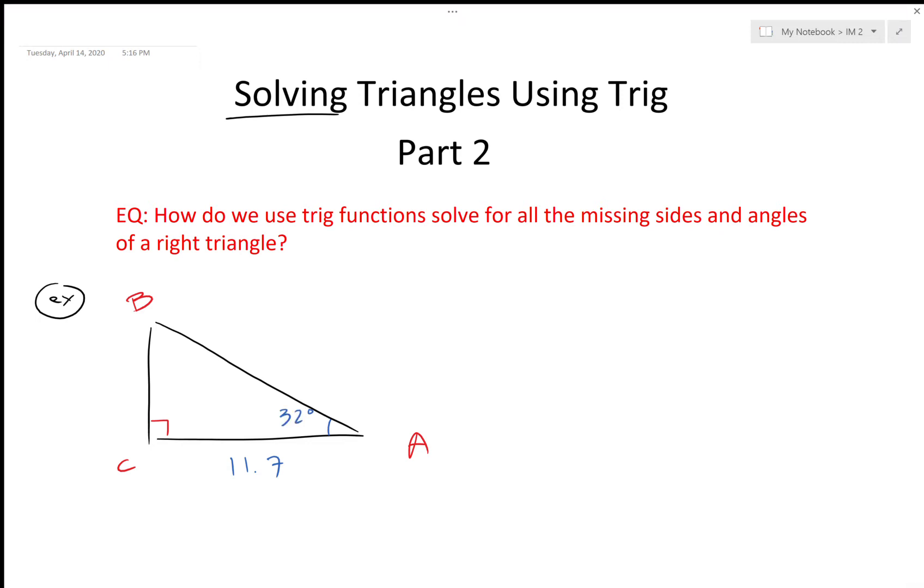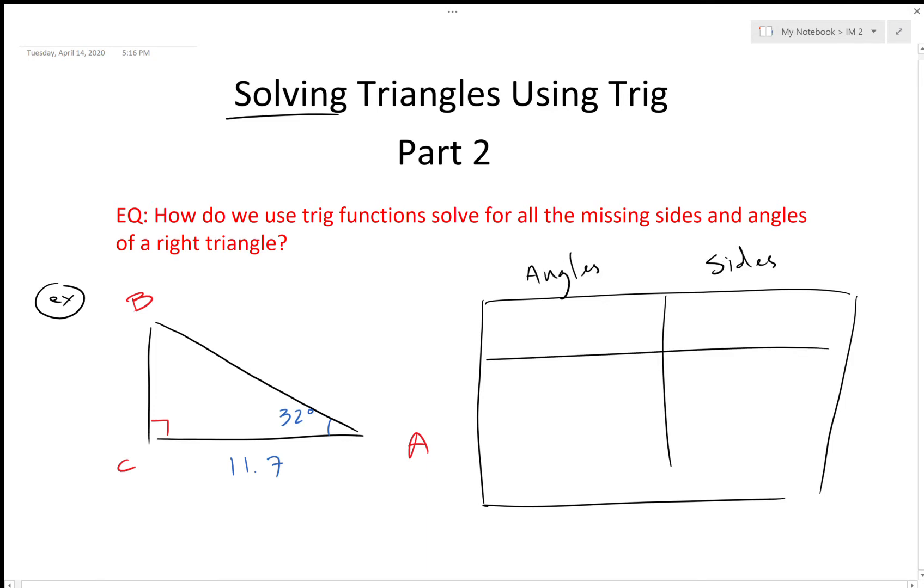Remember the way I like to set these up is by organizing a table of all the angles and all the sides, because we need to find everything—all three sides, all three angles. So we have angle A, angle B, and angle C.